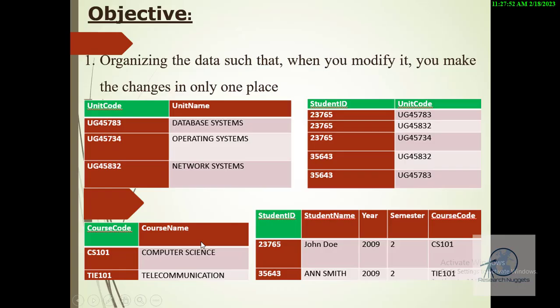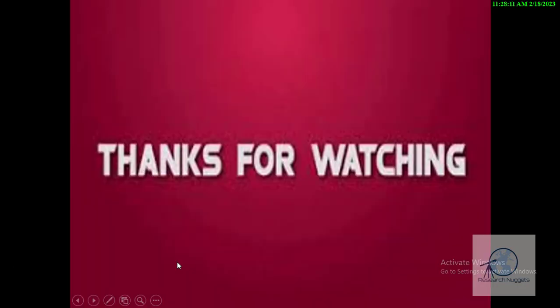When you have organized it this way, you are going to see that now John Doe appears only once. And if we needed to make changes, we shall only make the changes from one particular place. Similarly, if we needed to change the course name, we will only change it from one particular place. Thank you for watching and I look forward to seeing you in the next lesson.